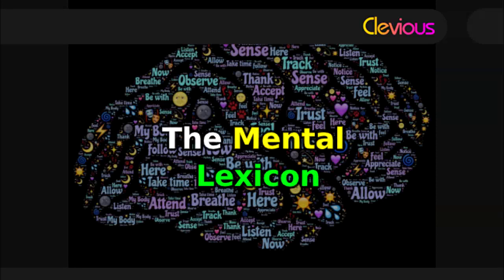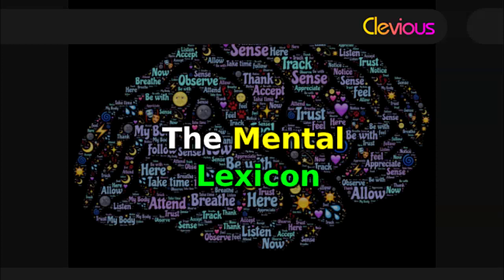A related question is how are lexical entries organized and connected to each other in the lexicon. The answer to this question might be fairly straightforward if there is only one type or level of lexical entry, but it gets more complicated if there are many layers of lexical entries for a word — e.g., its meaning, its form, its morphology, etc. Connections within and between layers would have to be considered in this case.